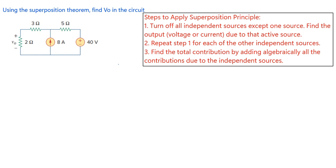find V0 in the circuit, and V0 is the voltage drop across the two ohms resistor. So we have two sources here — one independent current source and one independent voltage source. The steps say: turn off all independent sources except one source and find the output voltage due to that active source. Repeat for each other independent source, then find the total contribution by adding algebraically all contributions due to the independent sources.